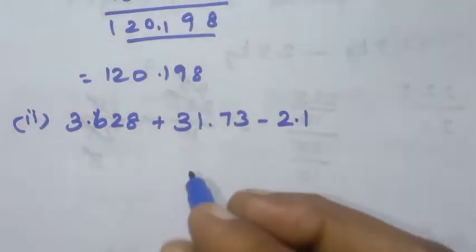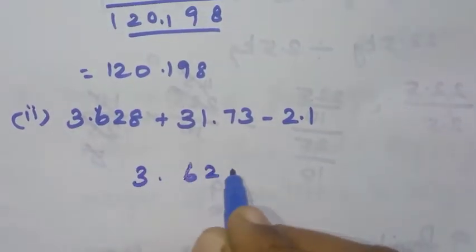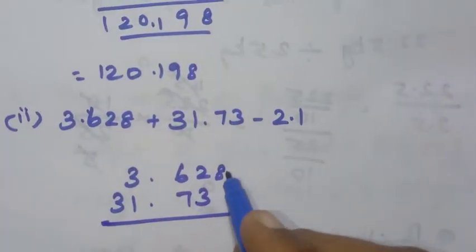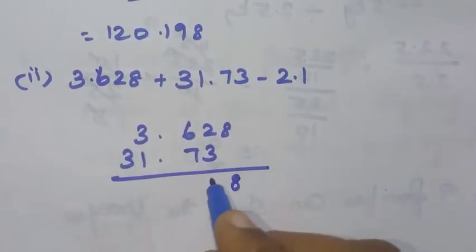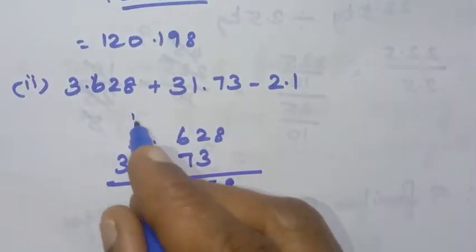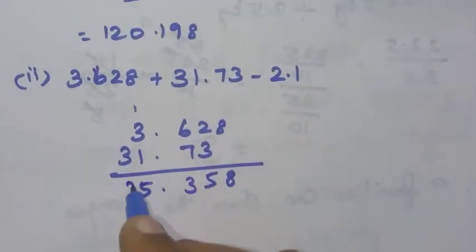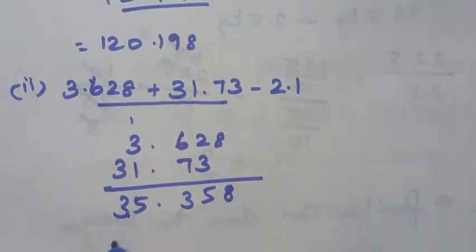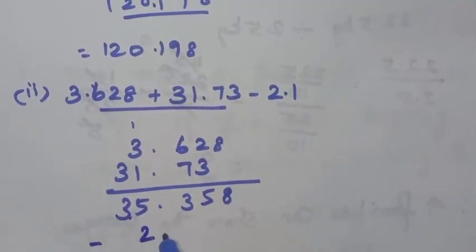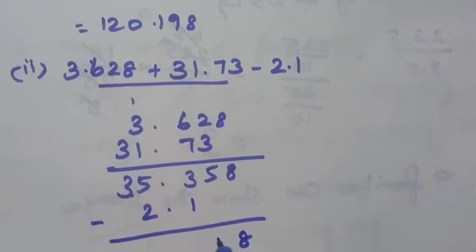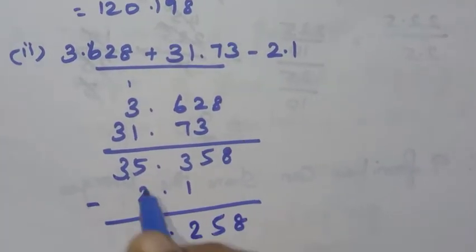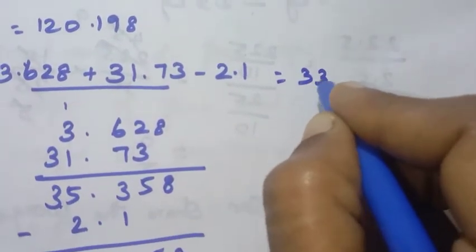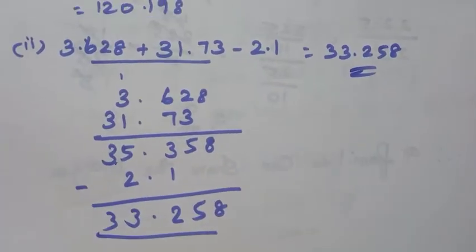Second part of sixth question: evaluate 3.628 plus 31.73 minus 2.1. First add the two numbers: 3.628 + 31.73 = 35.358. Then subtract 2.1: 35.358 minus 2.1. Working out: 8 remains, 5 minus 1 = 4, 3 minus 2 = 1 — wait, the answer is 33.258.